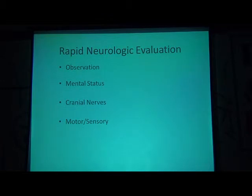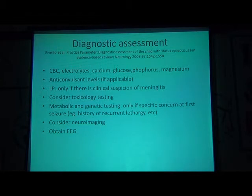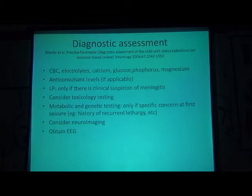Rapid neurological evaluation includes observation, GCS score, cranial nerve examination, and look carefully for fundus examination and motor and sensory systems. Investigations in a child with status epilepticus: CBC, serum electrolytes, calcium, glucose, phosphorus, magnesium, and anticonvulsant levels if applicable. Do lumbar puncture only when meningitis is suspected. Consider toxicology screening and metabolic and genetic testing only for specific concerns. Consider neuroimaging — CT scan or MRI — and obtain an EEG.